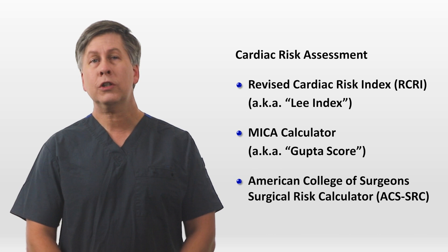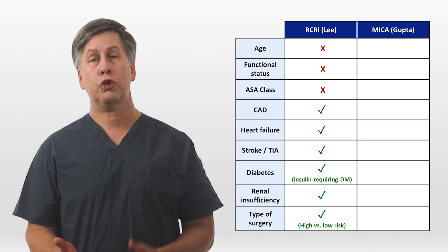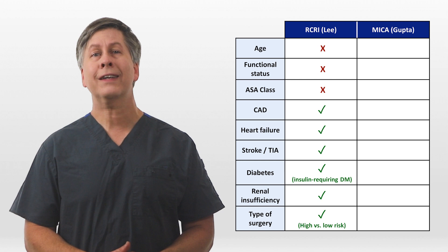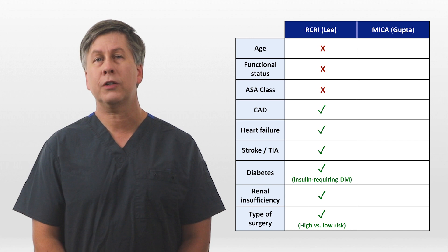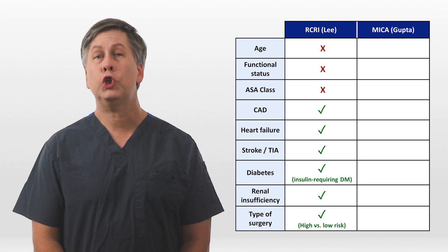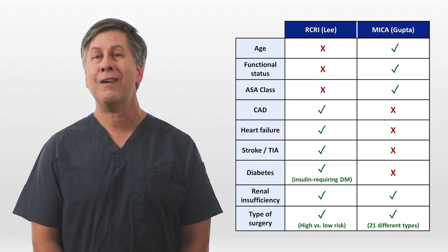In terms of specific variables: the RCRI uses history of coronary artery disease, heart failure, stroke or TIA, insulin-requiring diabetes, creatinine, and a dichotomous assignment of the procedure to high versus low risk. A less common but possibly better-performing version of the RCRI omits diabetes and uses GFR instead of serum creatinine. Meanwhile, the MICA incorporates age, the patient's functional status, ASA class, creatinine, and a much more granular assessment of the type of surgery.